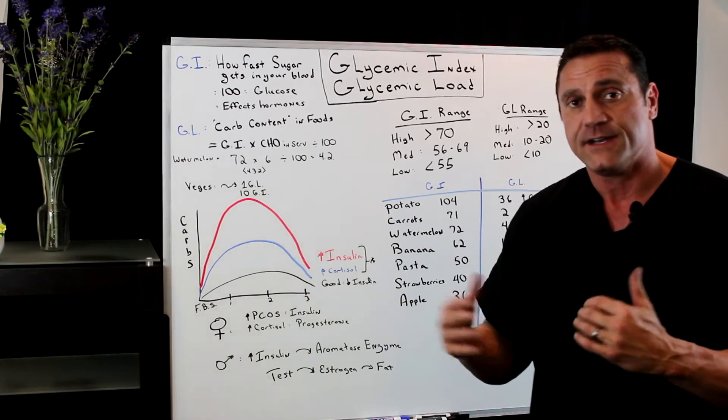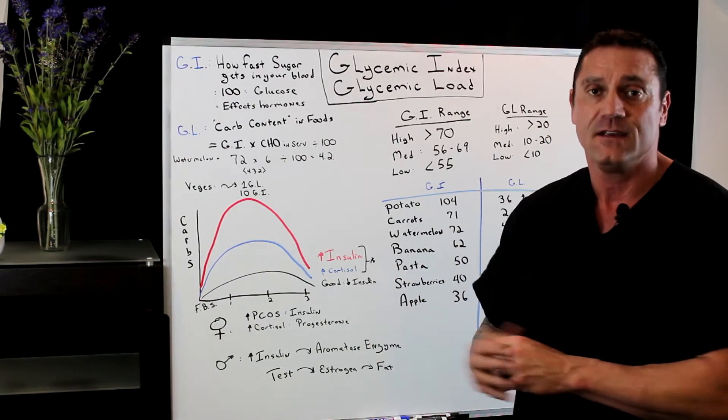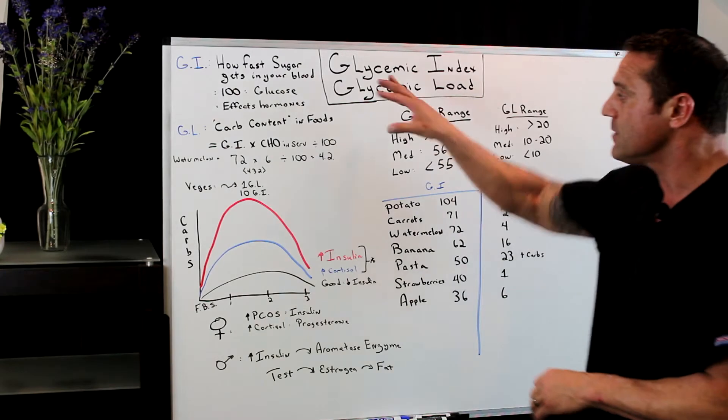The important part of the glycemic index, with the blood sugar, is how is it going to affect your hormones, predominantly insulin and cortisol.